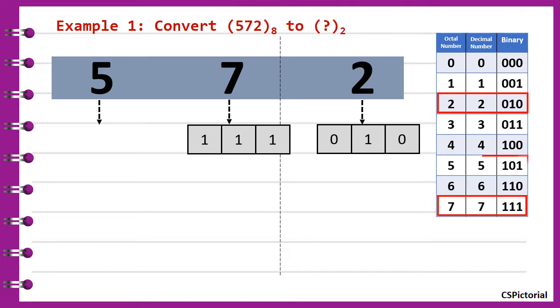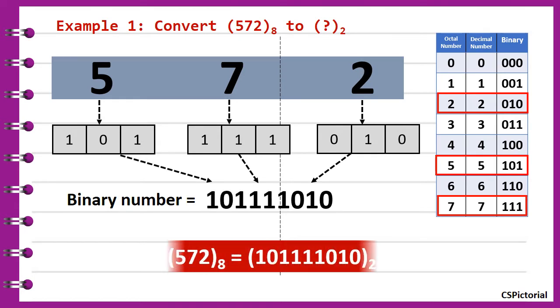Replace each octal digit with the corresponding binary value. Write the binary digits together and that will be the answer. Here 572 in octal is equal to 101111010 in binary.